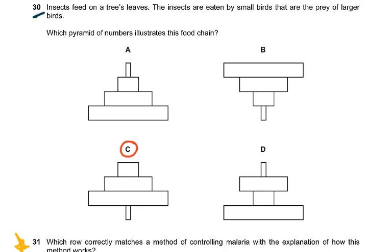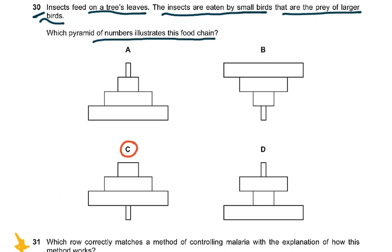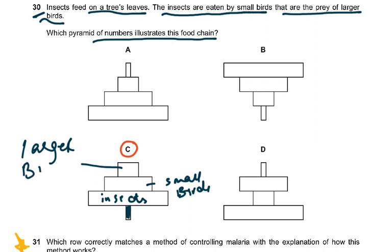Question 30: insects feed on a tree's leaves; insects are eaten by small birds that are the prey of larger birds. Which pyramid of numbers illustrates this food chain? The tree is one organism at the base, then many insects, then fewer small birds, then even fewer larger birds — the numbers decrease at each level. The pyramid of numbers is the important concept to read carefully here.